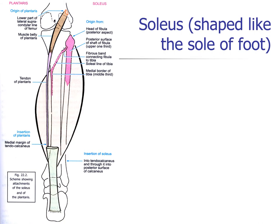Now, soleus. It is shaped like the sole of the foot. The origin of soleus is horseshoe-shaped, arising from the posterior surface of the head and upper one-fourth of the shaft of the fibula, the soleal line, and the middle one-third of the medial border of the tibia below the soleal line, and from a tendinous arch between the tibia and fibula beneath which the popliteal vessels and tibial nerve pass. Insertion: the tendo achilles or tendo calcaneum, which is the strongest tendon of the human body and about 15 cm long. It is the conjoined tendon of the triceps surae and acts as the prime mover of plantar flexion at the ankle joint.